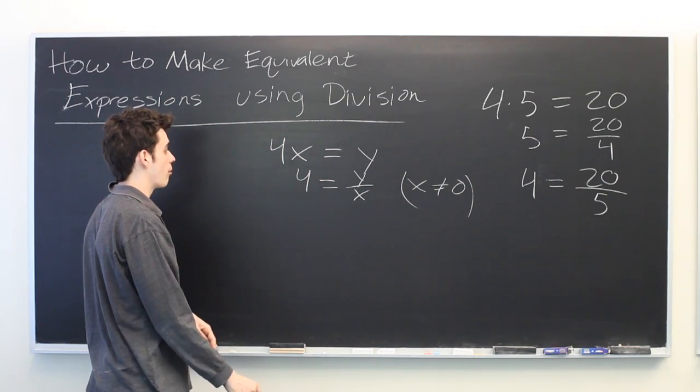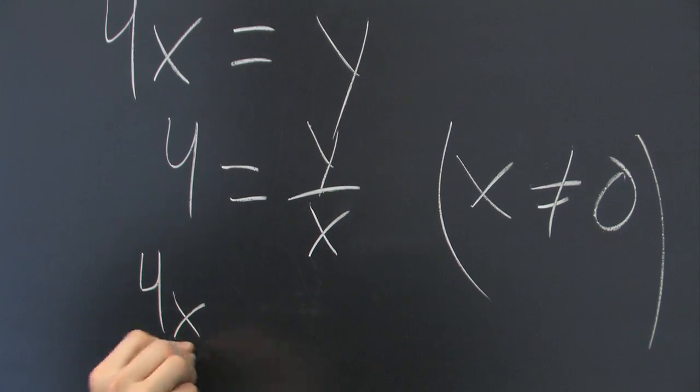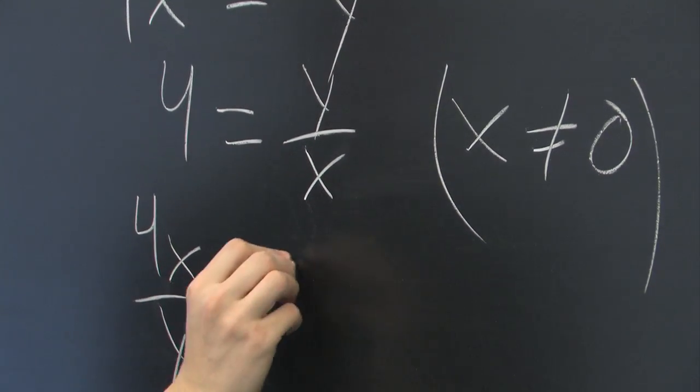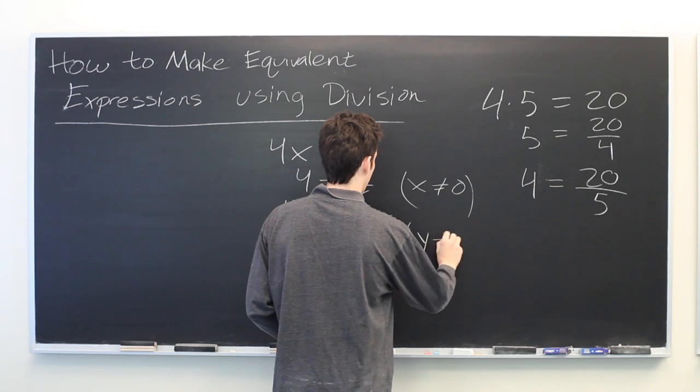Or, from our original equation, we can divide both sides by y. We get 4x over y equals 1, where here we're assuming that y is not equal to 0 for the same reason.